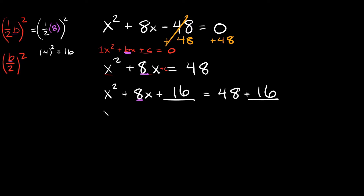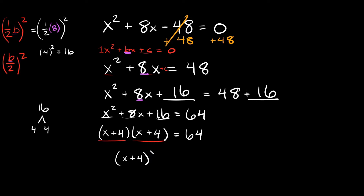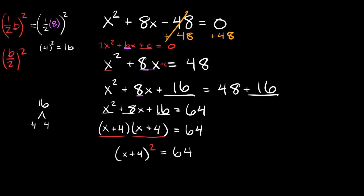Now we factor: x² + 8x + 16. We need two numbers that multiply to 16 and add to 8 — that's positive 4 and positive 4. So we get (x+4)(x+4) = 64, which we can rewrite as (x+4)² = 64.